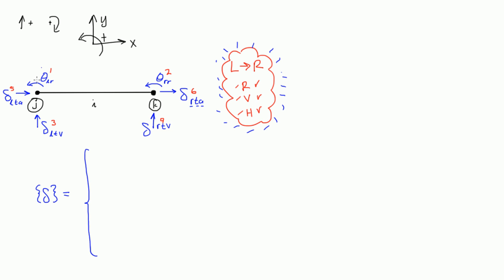So left to right, here's number one. That was delta LR. Then we have two, delta, or I'm sorry, these are theta's. Theta LR, theta RR, right? Sorry about that. And then you do the verticals next. You have delta LTV. And then you have delta RTV, right? That's number four. And then five and six are the horizontal ones. So you have delta LTA, and then finally you have delta RTA.